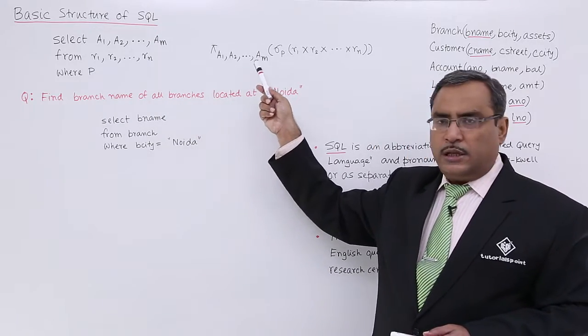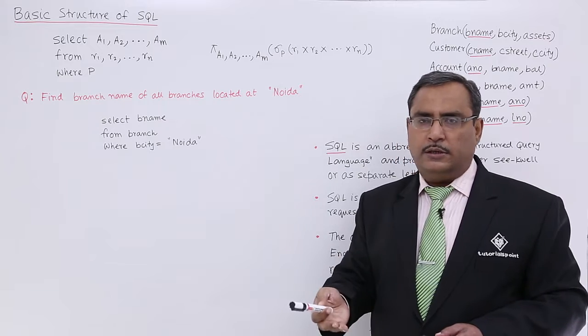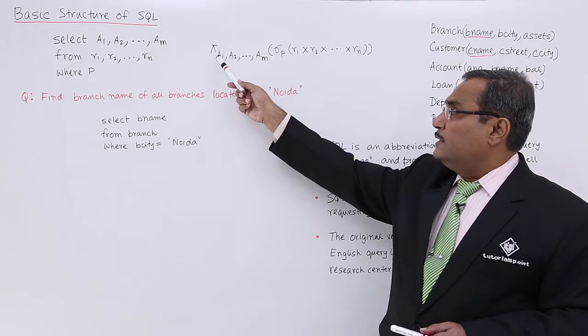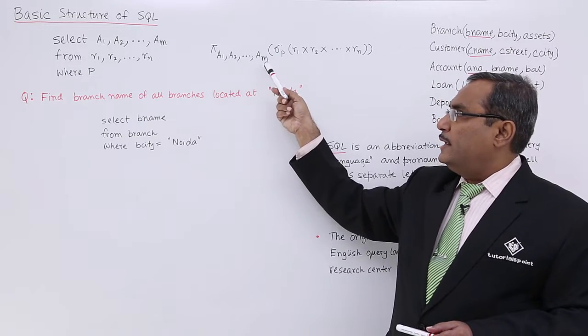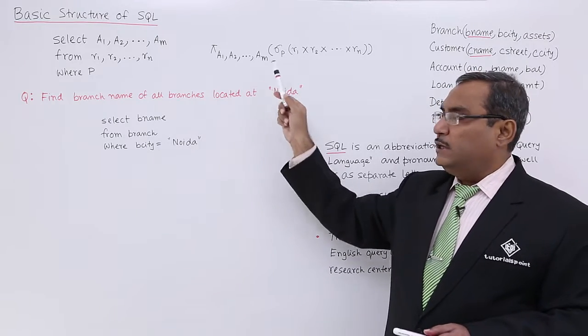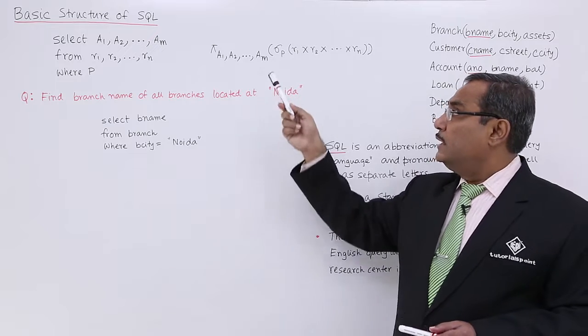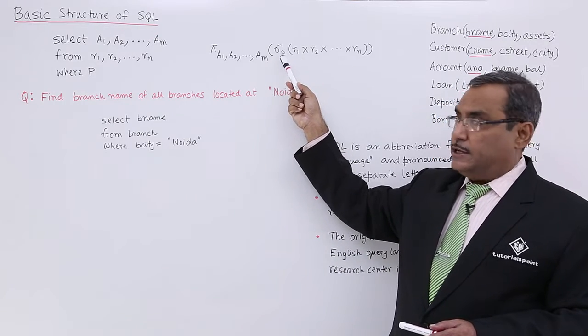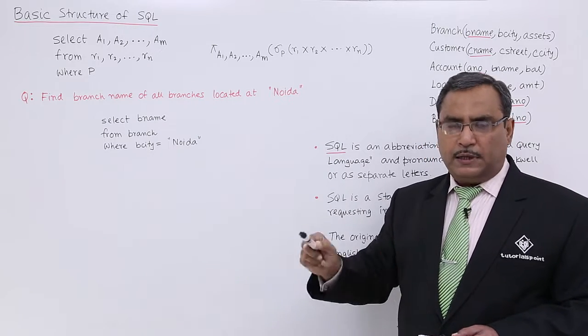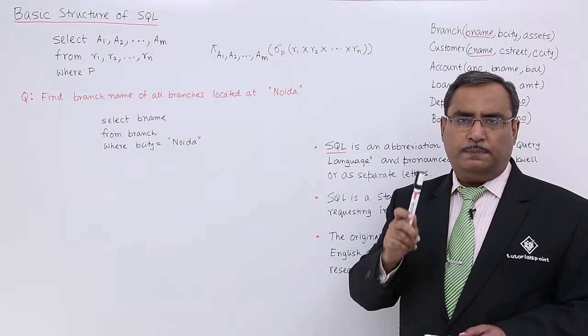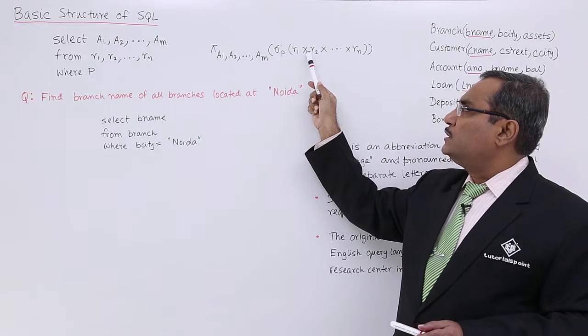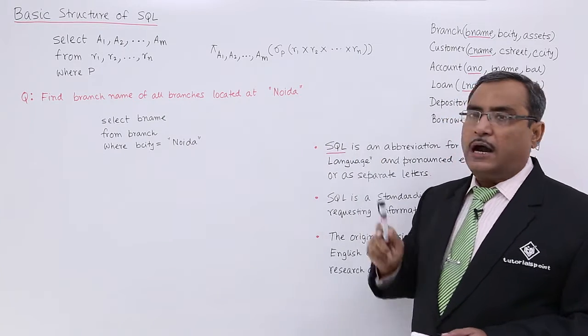The respective relational algebraic form—we have already learned the relational algebra in our previous videos you can watch that one—it is nothing but π A1, A2, dot dot dot Am. That means we shall be doing the projection operation π on these particular attributes or columns or fields on this particular relation generated by applying σ P. That means we are selecting those tuples which will satisfy this predicate or condition P is true.